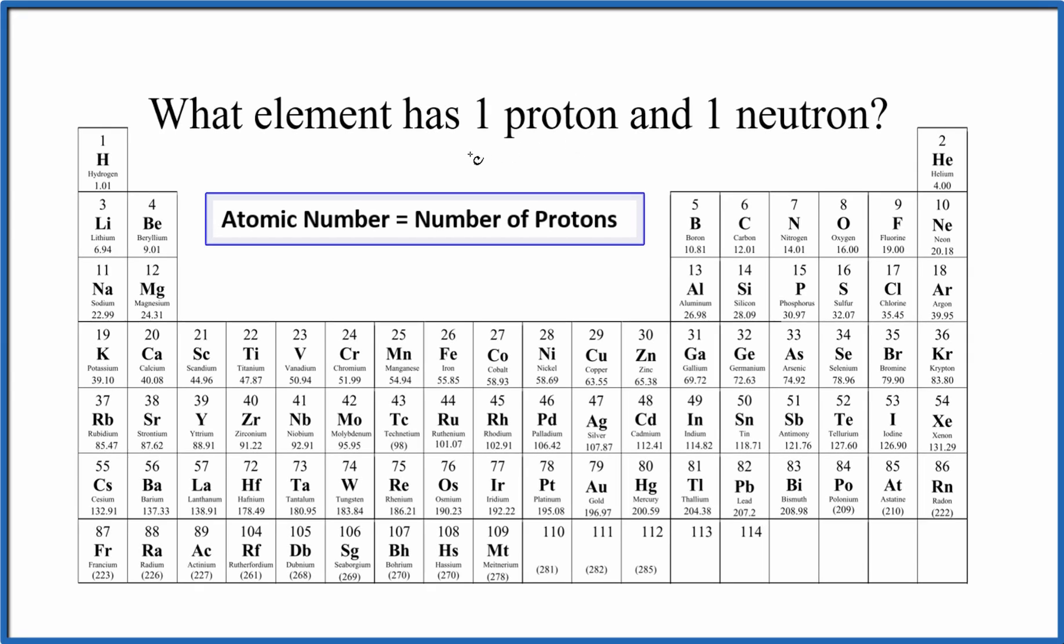Let's figure out which element has one proton and one neutron. To do that, we need to recognize that the number of protons equals the atomic number on the periodic table. So if we have one proton and we find atomic number one, we'll know which element has one proton.